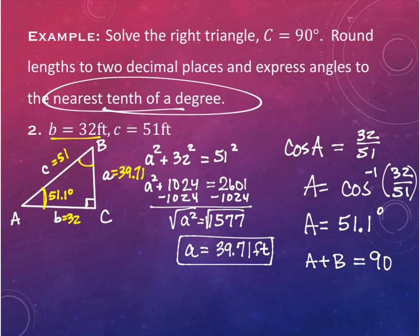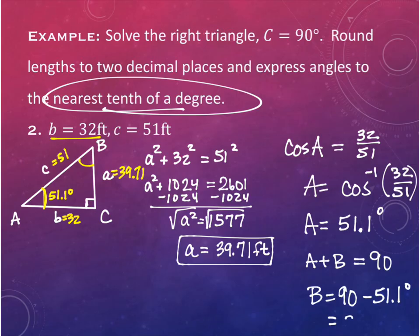Angle B equals 90 minus 51.1, which gives us 38.9 degrees.